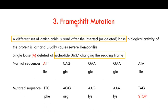The third kind of mutation is the frameshift mutation. In a frameshift mutation, a different set of amino acids is read after the inserted or deleted base, changing the biological activity of the protein — and it usually causes severe hemophilia A. This can result from insertion or deletion; in hemophilia we are focusing on a deletion. In this particular case, a single A is deleted at nucleotide position 3637, thereby changing the entire reading frame.